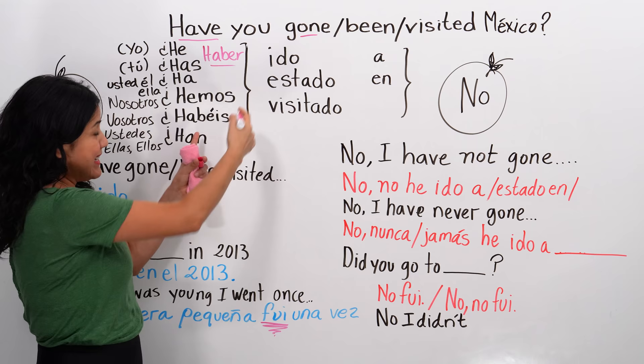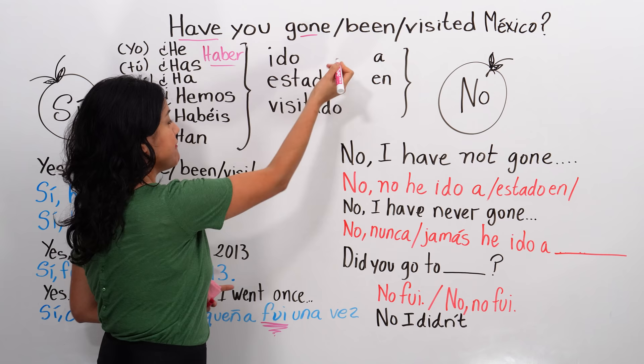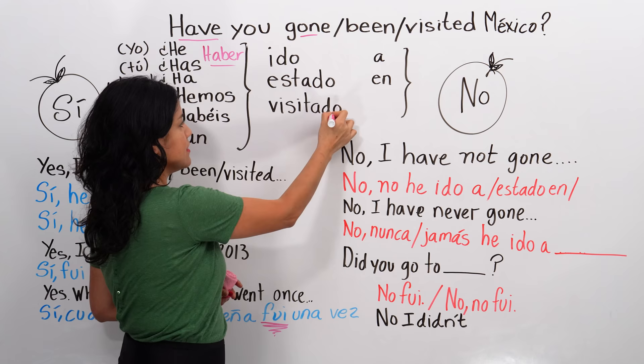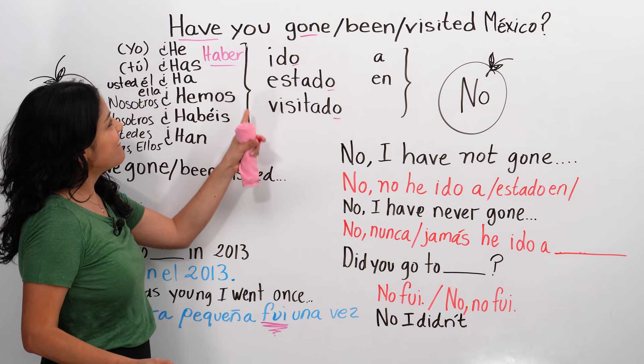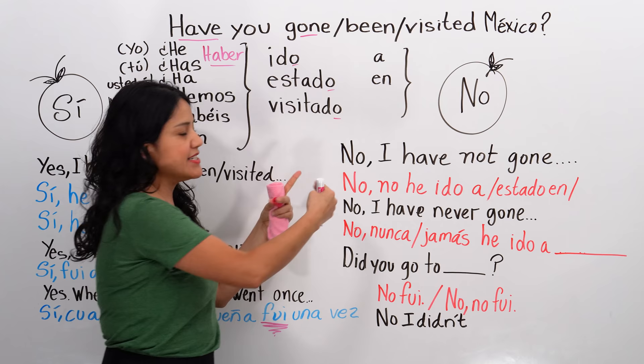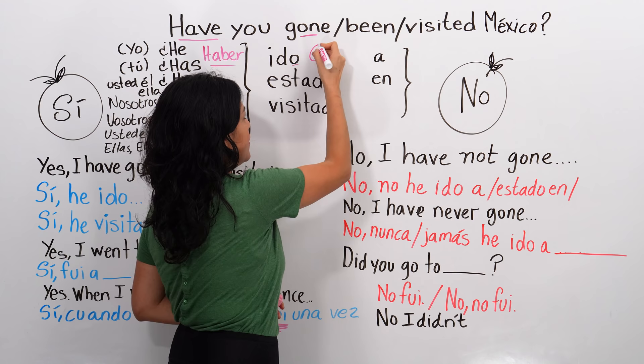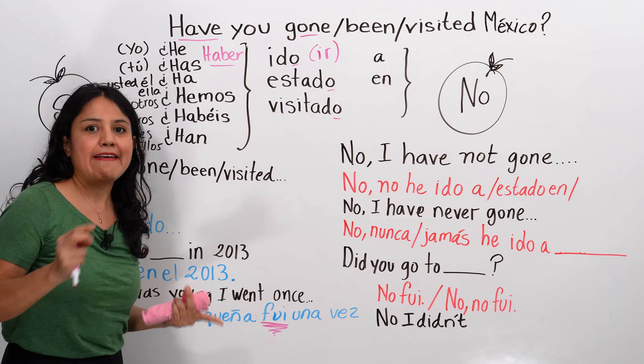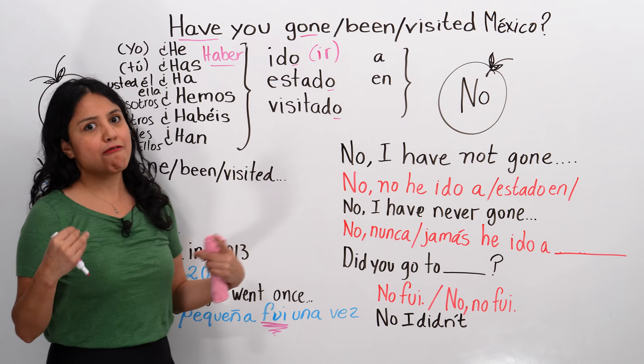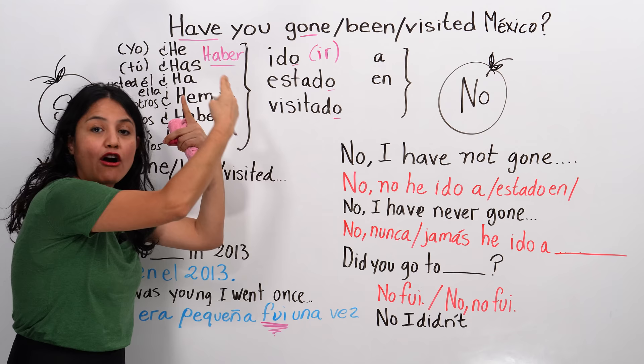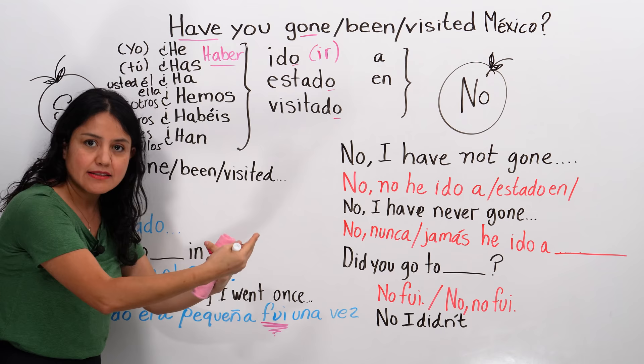In this case, haber needs the past participle — the verbs I showed you in my lesson about past participles. In this case: ido, estado, visitado. They all end in -o. Entonces, tenemos el verbo haber + el pasado participio. Ido es el pasado participio de ir — to go. The past participle of 'ir' is 'ido,' just as the past participle of 'to go' in English is 'gone.' I never say 'I have went'; I say 'I have gone.' We use the auxiliary verb and the past participle to make the structure correct — same in Spanish.